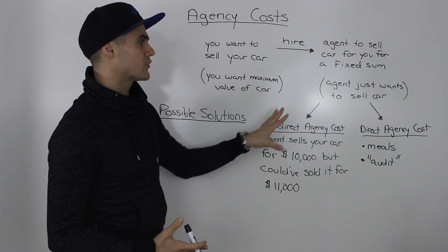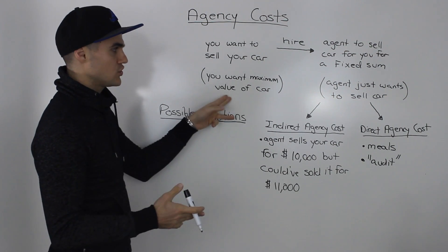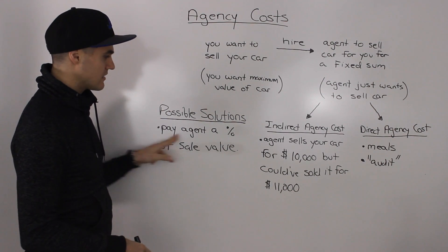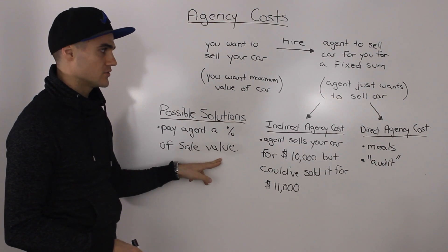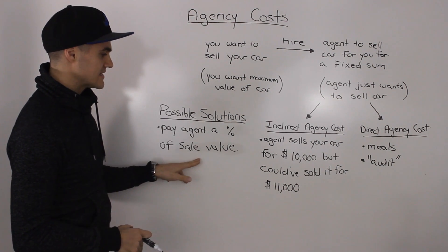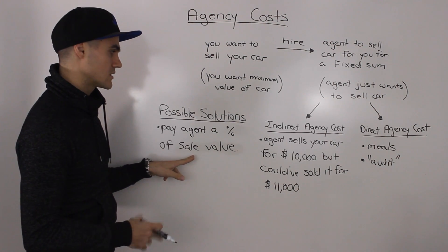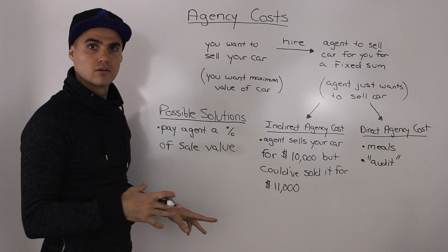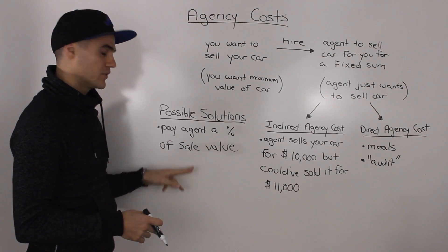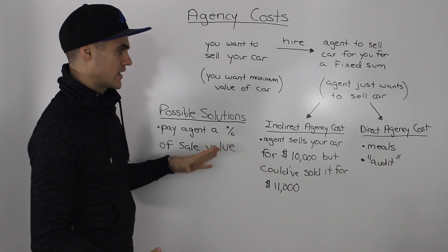So what are possible solutions to align the interests of you and your agent? The most common approach is to pay the agent a percentage of the sale value — the higher he sells the car for, the more he gets paid. However, that doesn't necessarily guarantee the maximum possible amount, because some agents might still accept a lower payout to avoid the extra work. It's not foolproof, but it's a possible solution.